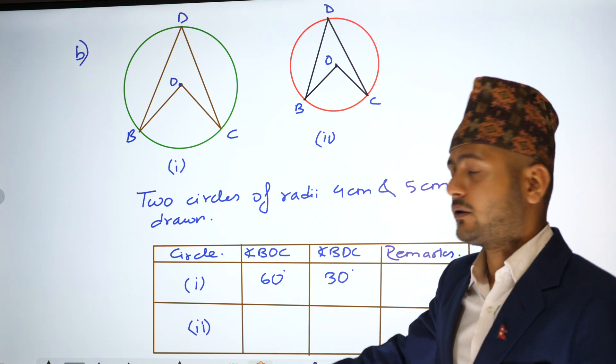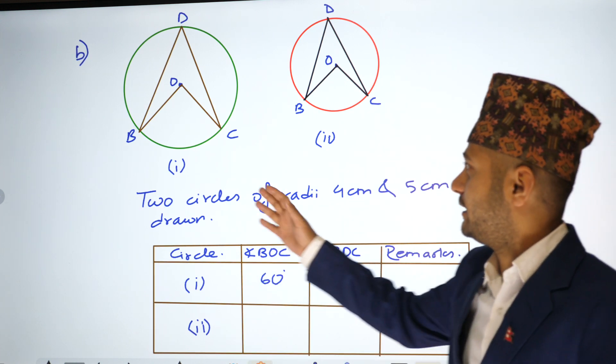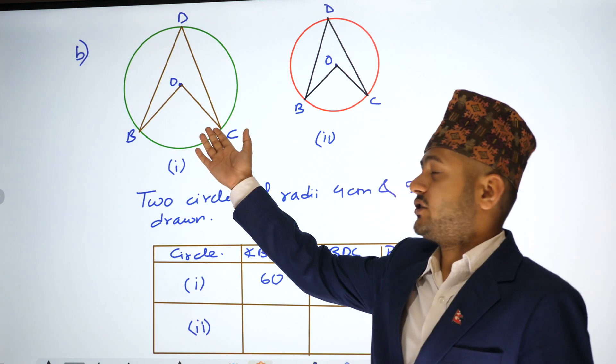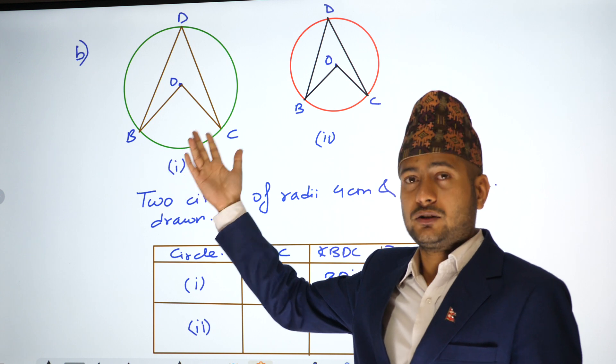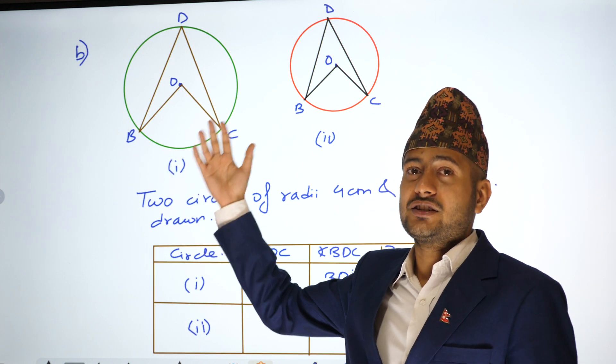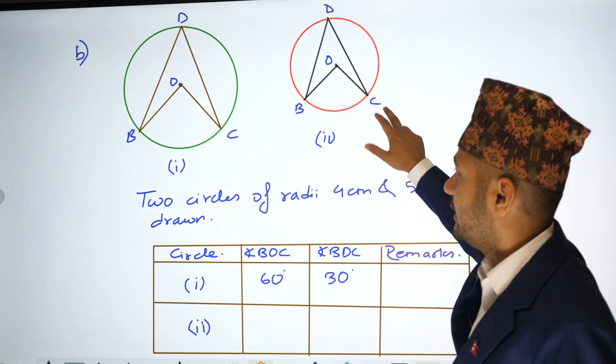Conclusion: The central angle is double that of the inscribed angle when they are both standing on the same arc.